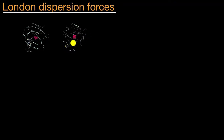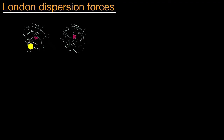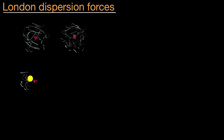So if these are both neutral in charge, how would they be attracted to each other? That's what London dispersion forces actually explain, because we have observed that even neutral atoms and neutral molecules can get attracted to each other. The way to think about it is, electrons are constantly jumping around probabilistically. They're in this probability density cloud, where an electron could be anywhere at any given moment, but they're not always going to be evenly distributed. You can imagine that there is a moment where that left atom might look like this, just for a moment, where maybe slightly more of the electrons are spending time on the left side of the atom than on the right side.